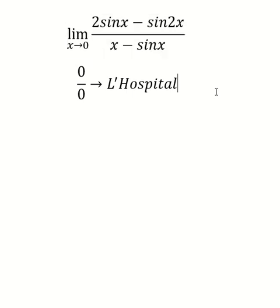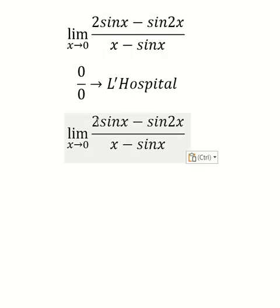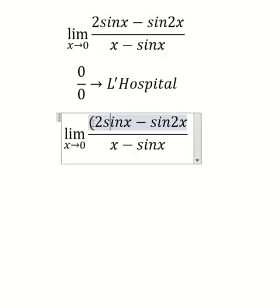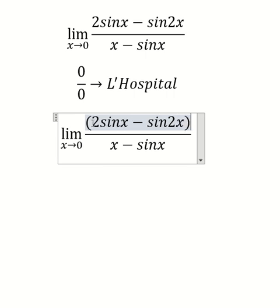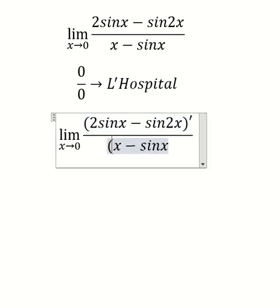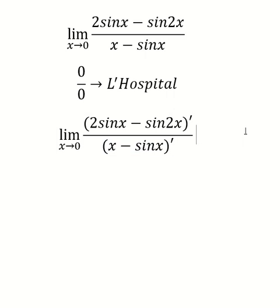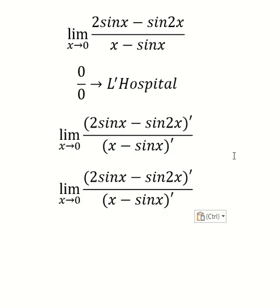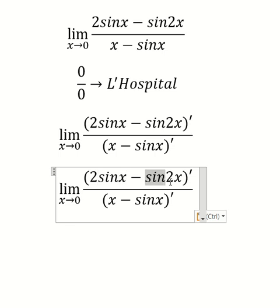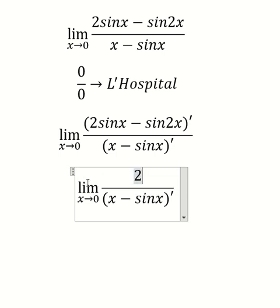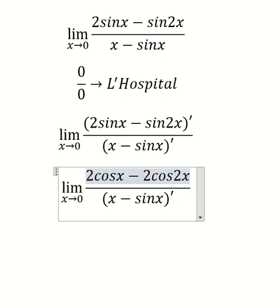That means we need to do the first derivative on the numerator and denominator. So the numerator has cosine x, and the denominator has 2 cosine 2x. After we do the first derivative, this one becomes one, and this one becomes cosine x.